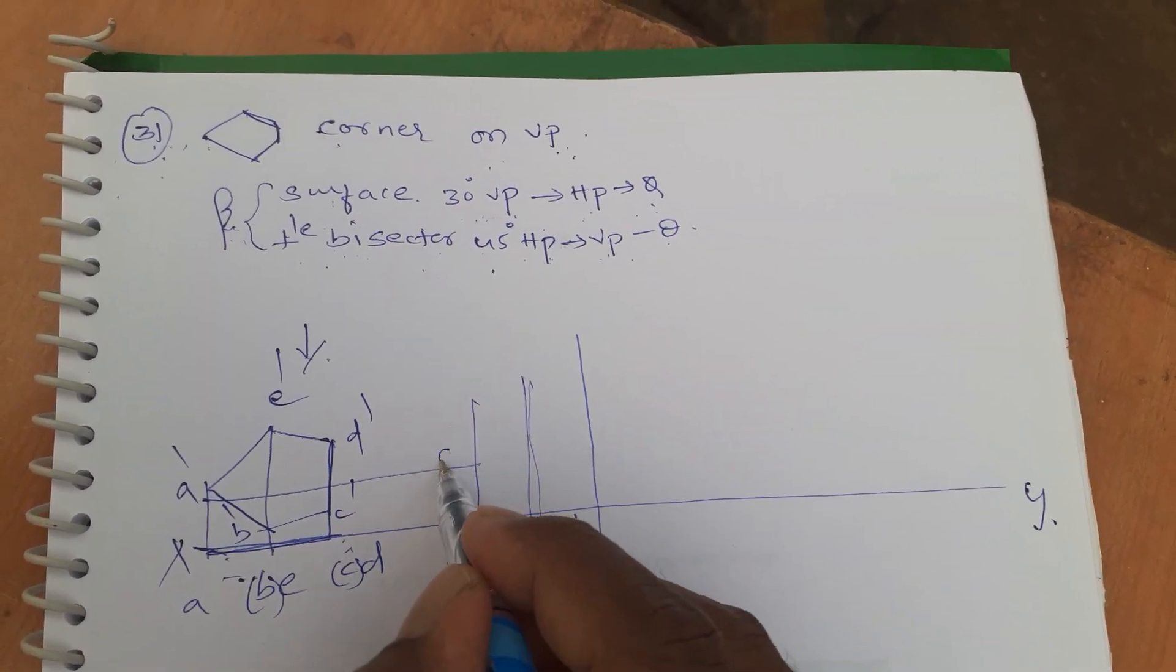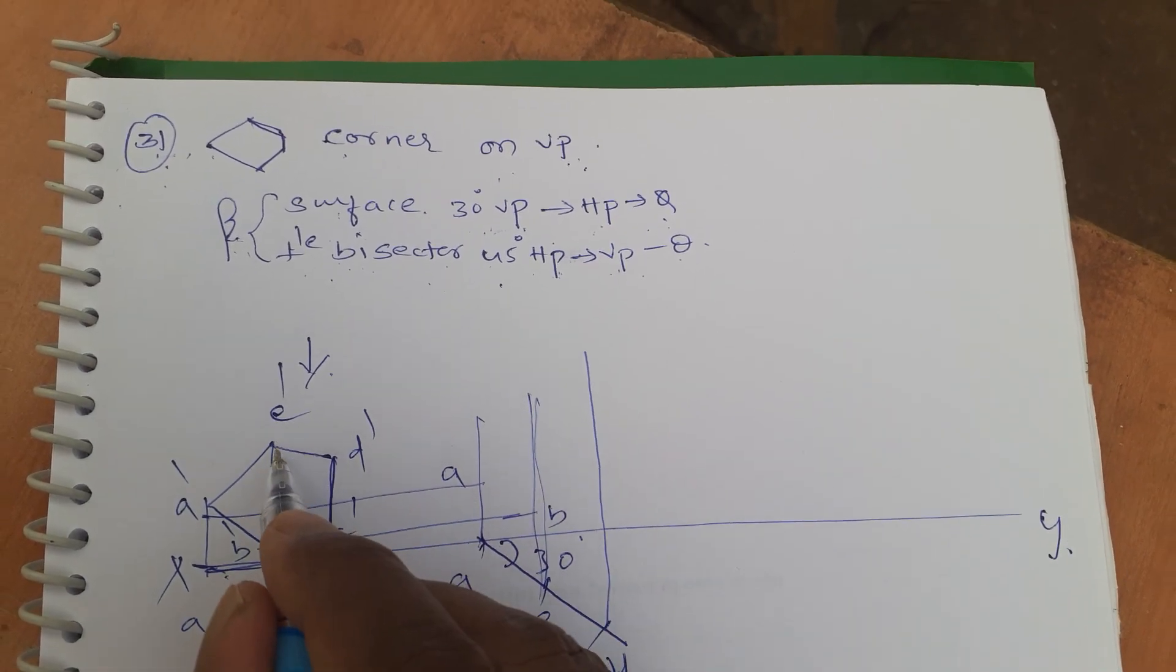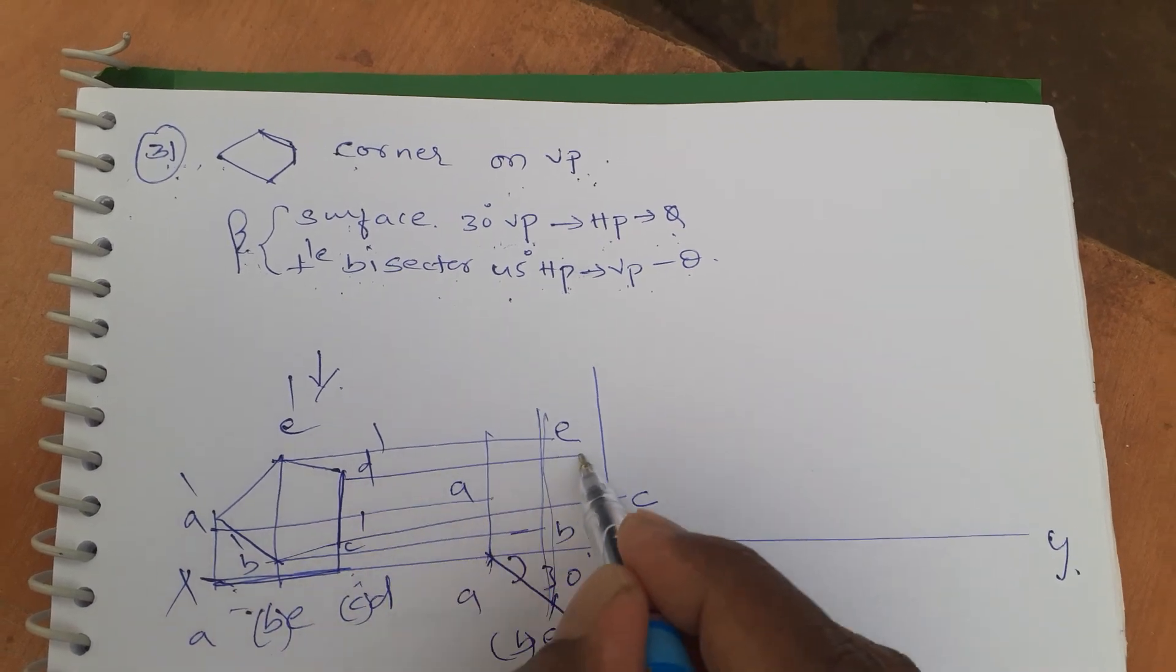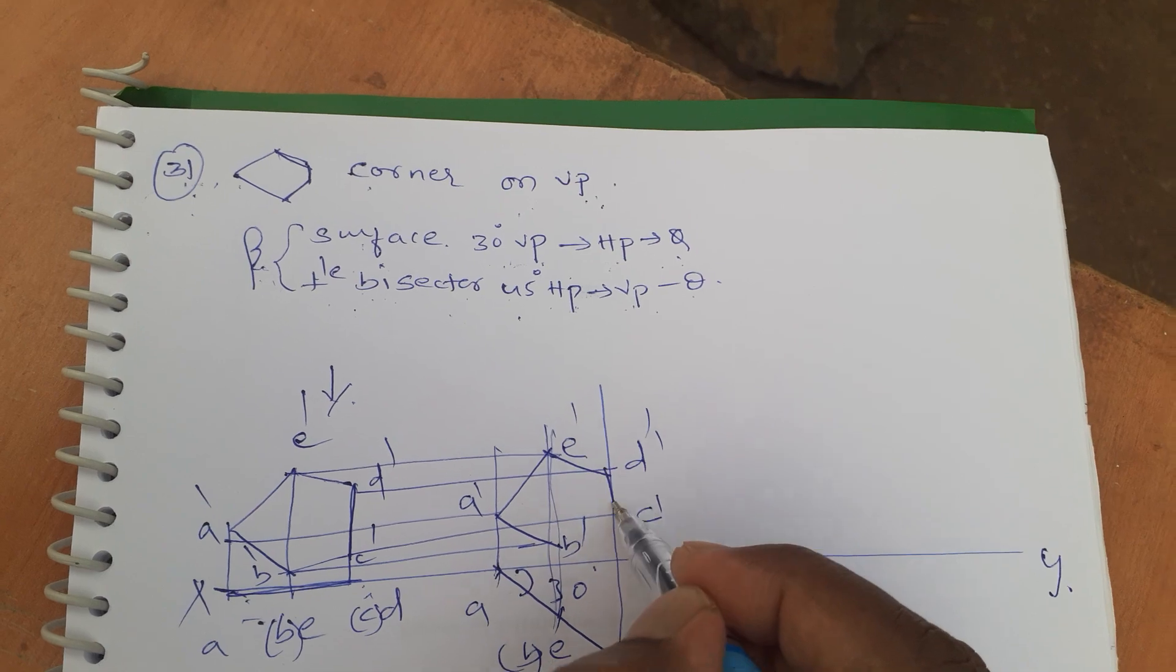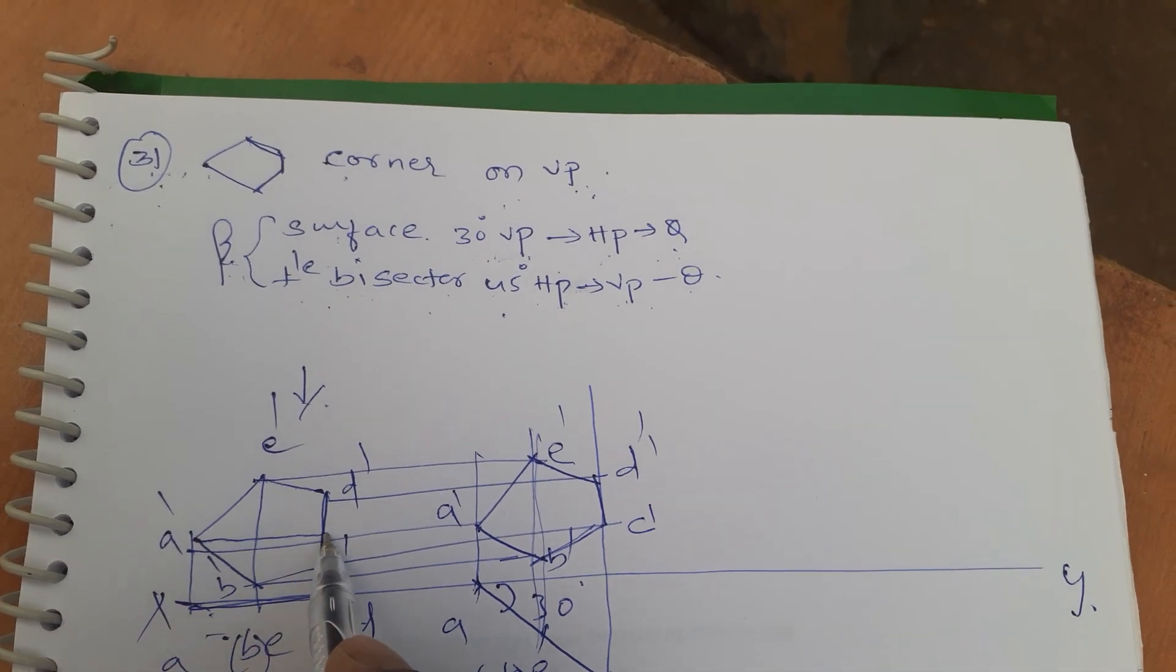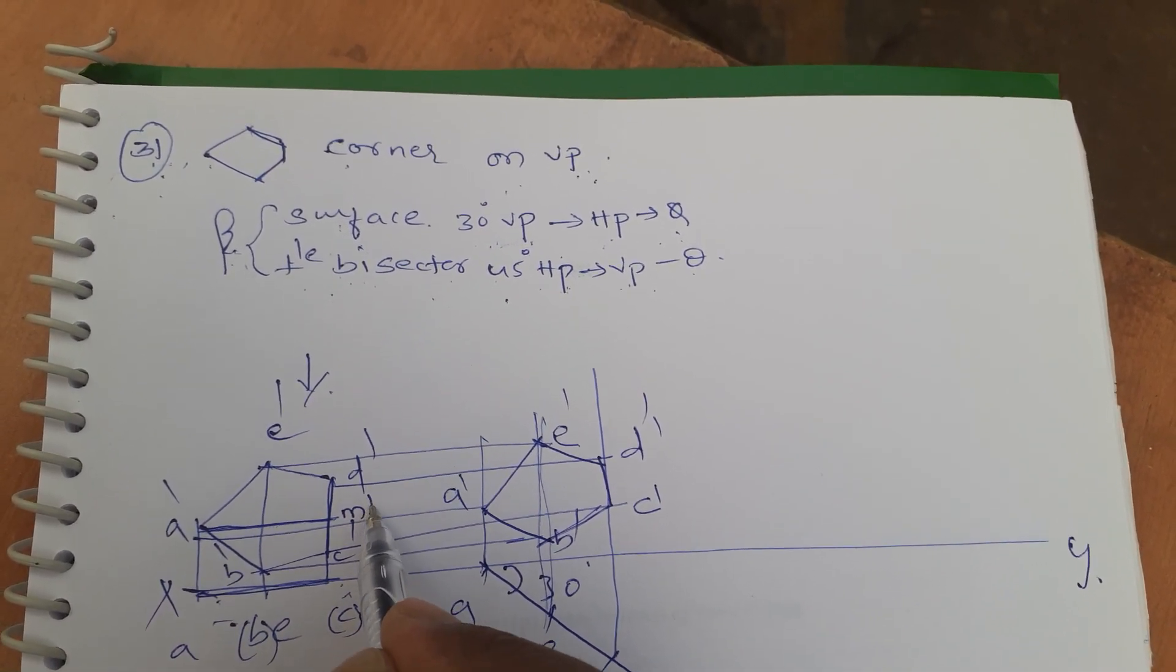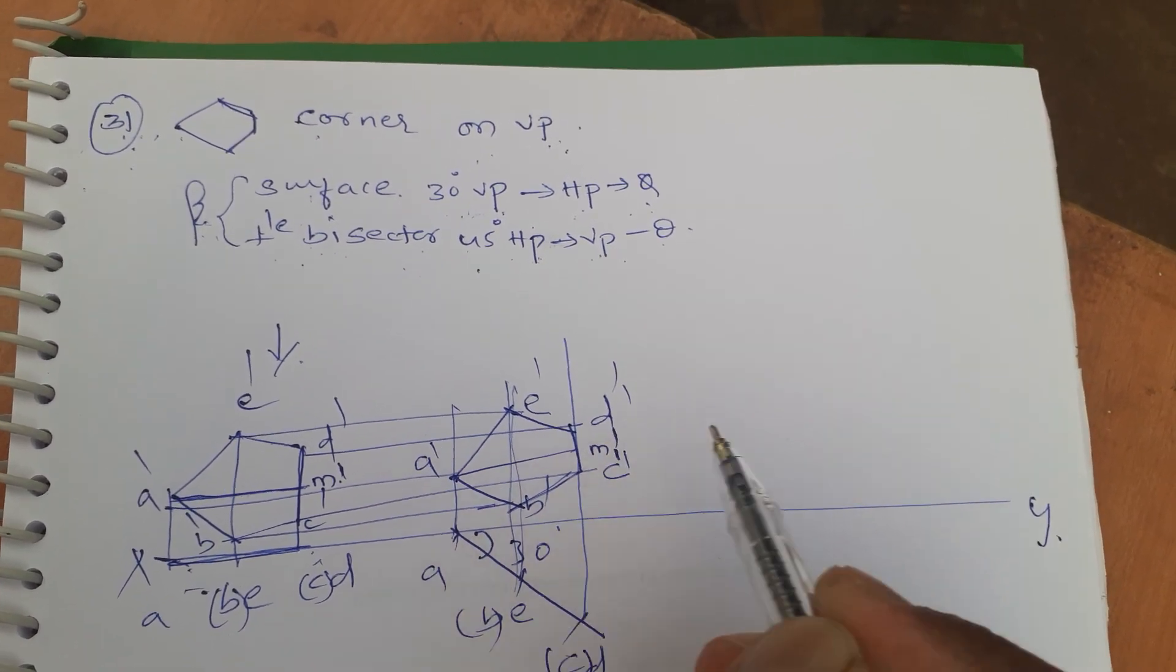Don't be in a hurry, just name these: this is b, this is e, this is c, these are with dashes. Make a perpendicular bisector. Here it is, from here to here, this will be m dash, and from here to here, it will be m1 dash.